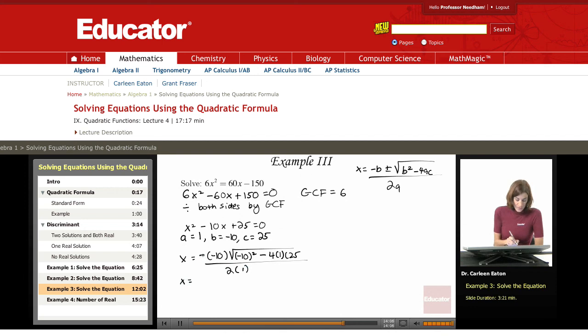So x equals negative times a negative is a positive. Negative 10 squared gives me 100. 4 times 1 is 4 times 25 is 100 divided by 2. Well, what happens here is I end up with 0 here.